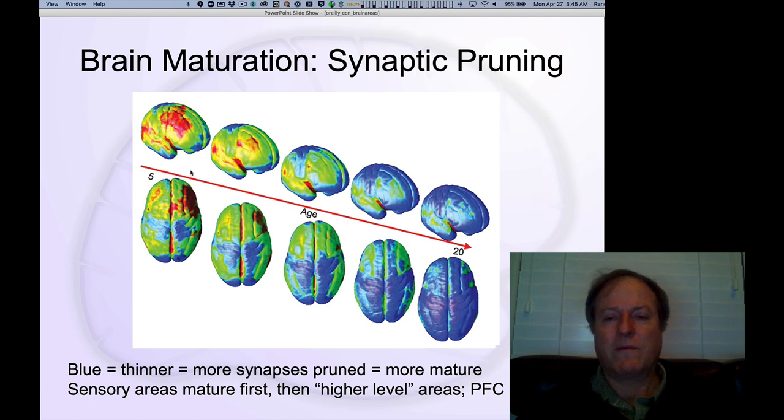One of the most important facts that we know about development is that it is primarily like a chisel. Our brains are kind of like this big unformed block of marble. And then as our brains develop, this chisel of synaptic pruning carves away all the connections, synaptic connections that we don't need, leaving the ones that are actually effective.